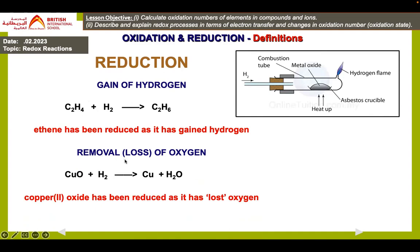Gain of oxygen is oxidation, so loss of oxygen is reduction. For example: copper oxide plus hydrogen gas gives copper plus H₂O. Copper had oxygen before the reaction, and after the reaction it doesn't have any oxygen — copper has lost oxygen. Loss of oxygen is called reduction.